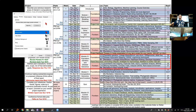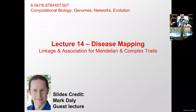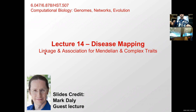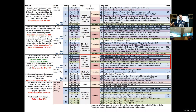Today we're going to be talking about GWAS — Genome-Wide Association Studies and Disease Mapping — and we're also going to start with linkage, which is the traditional way of mapping loci from Mendelian traits.